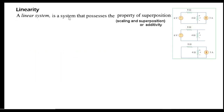The third property is linearity. A linear system possesses the property of superposition and scaling. Both must hold: the scaling property must be valid and the additive (superposition) property must be valid. From circuits, superposition means eliminating one source, finding its contribution, then eliminating the other and finding its contribution, and verifying that their sum equals the combined response.